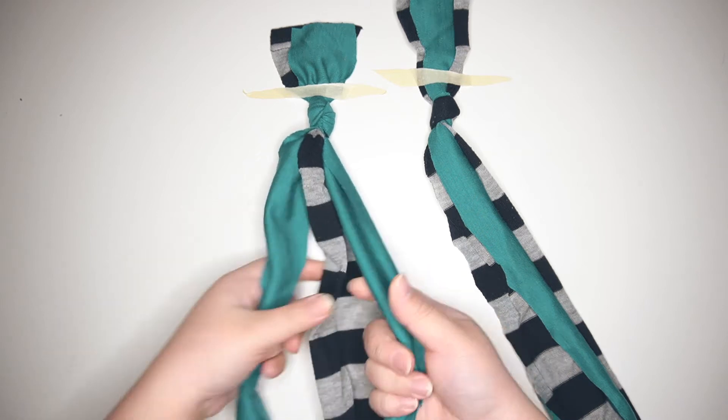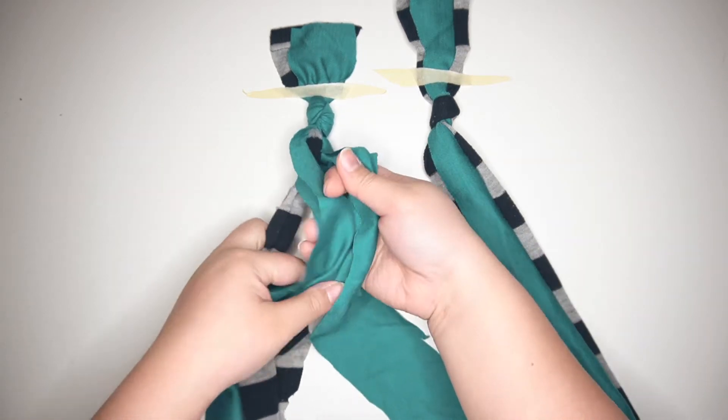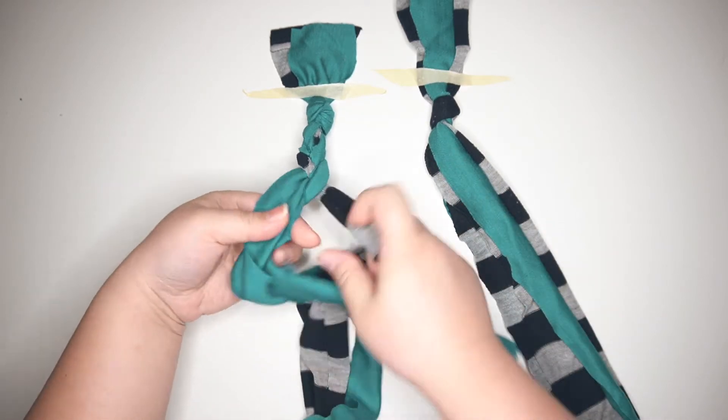You can make the toy whatever length you think will work. I have two small dogs, so I went with a smaller braid. It is important to braid longer than what you want the cut off to be so that the braid will be very tight.